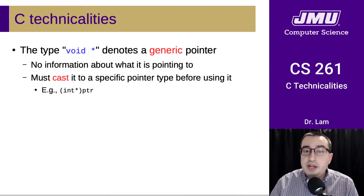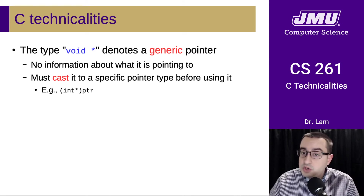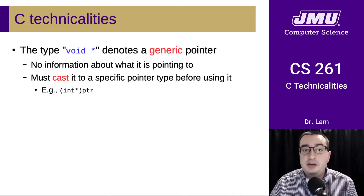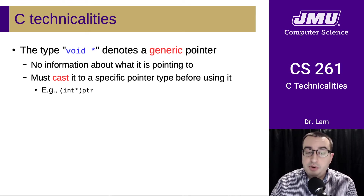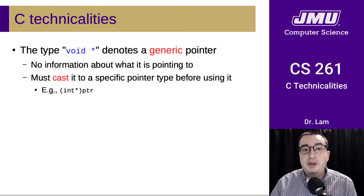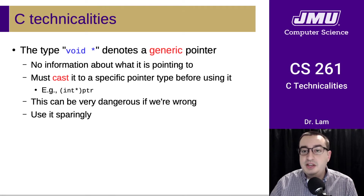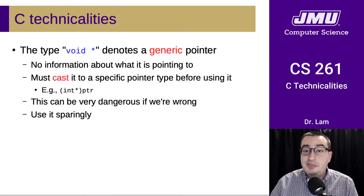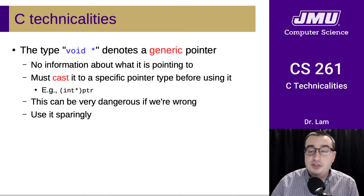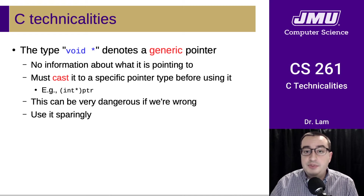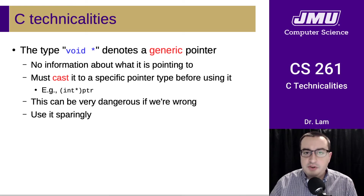If you do have a void star and you know what it's pointing to — with out-of-band information about what it's going to be pointing to — you can still use that pointer as you would a pointer of that type by casting it. This is very dangerous because if you're wrong, you're basically causing an invalid memory access, which in the best case will cause your program to crash and in the worst case will cause it to subtly or silently corrupt data. So you should be using this sort of thing very, very sparingly.